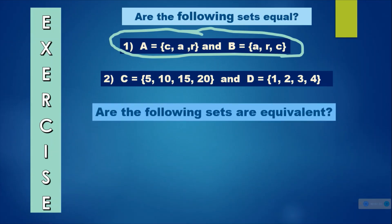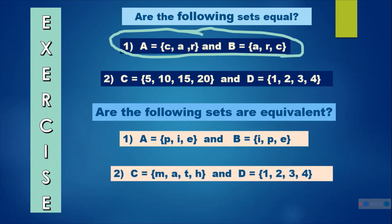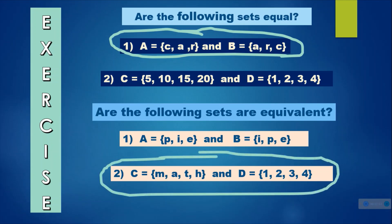Are the following sets equivalent? Number 1: A is equal to {P, I, E} and B is equal to {I, P, E}. Number 2: C is equal to {M, A, T, H} and B is equal to {1, 2, 3, 4}. The answer is number 2, because they have different elements but the same number of elements — both have 4. So they are equivalent.